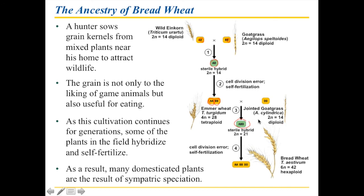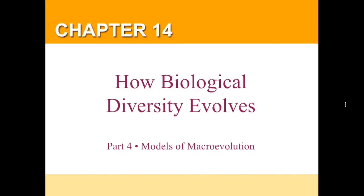Bread wheat is 6n=42 — hexa is 6 in Greek, so 6 times 7 equals 42. n equals 7, and 2n equals 14. That's the ancestry of bread wheat. People figured this out retroactively: we had bread wheat, then found ancient grains and worked backwards. In the cradle of agriculture — Mesopotamia, today's Iraq — that's where wild einkorn and goat grass are found, and that's why during the establishment of agriculture, people ended up with sympatric species that made for better bread wheat.